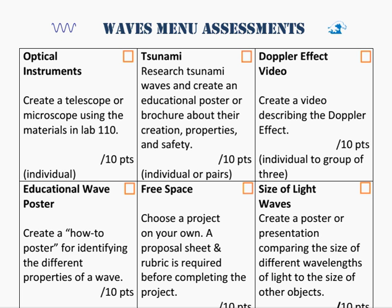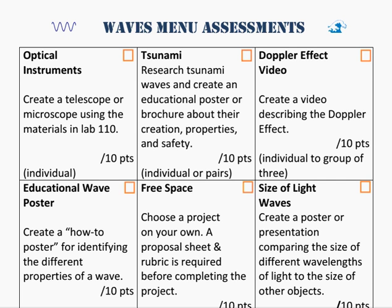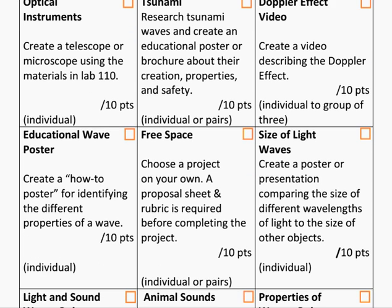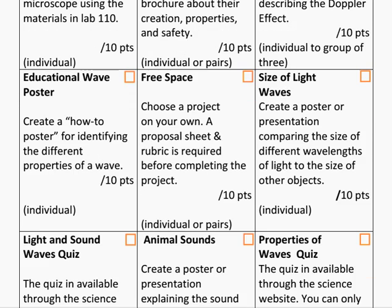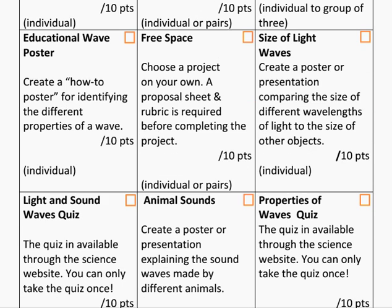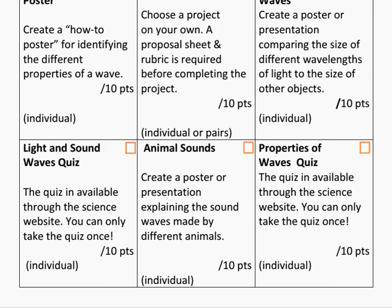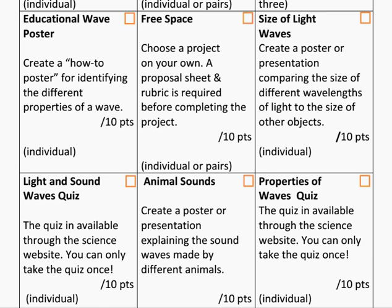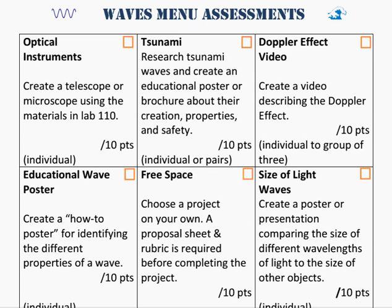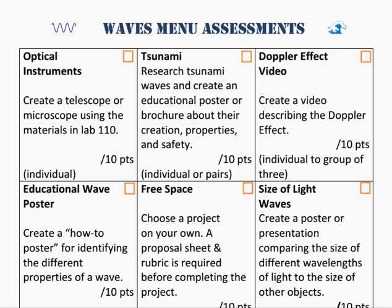Set up like a tic-tac-toe board, students are to choose assessments that are across, down, or diagonal to complete three of them for a total of 30 points. There are a variety of different kinds of activities that students can complete. Students cannot complete more than 30 points worth of assessments, and there is no extra credit during the menu assessment activities.